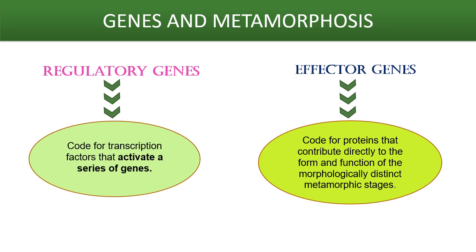Genes and metamorphosis go hand in hand. There are two types of genes which play an important part in metamorphosis: the regulatory genes and the effector genes. The ecdysteroids initiate a cascade of gene activity that involves both early and late genes. Most of these genes code for transcription factors that activate a series of genes for the proteins that build the structures of various stages. The effector genes are the genes that code for proteins that contribute directly to the form and function of the morphologically distinct metamorphic stages of the holometabolous insects. These can be structural proteins such as cuticular proteins or enzymes that participate in physiological activities like hydration, or even enzymes necessary for the formation of pigments found in different stages.